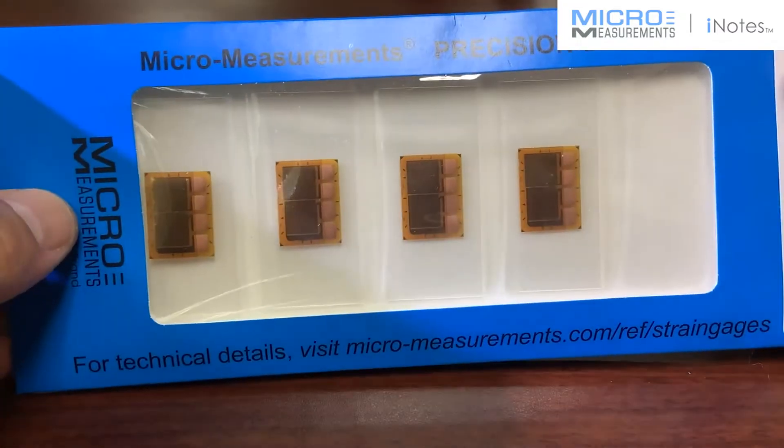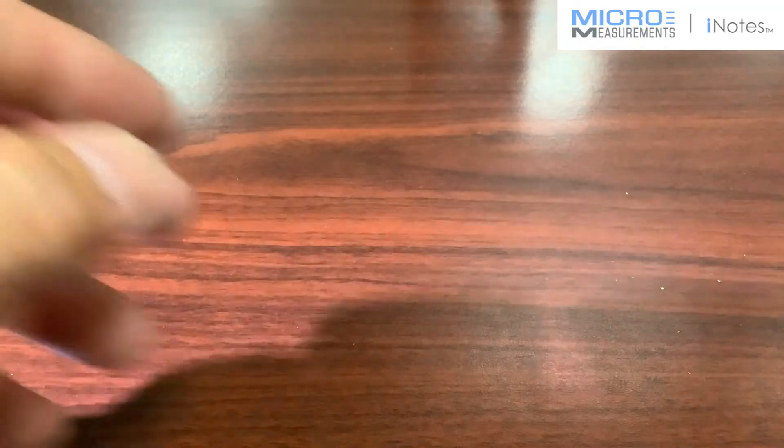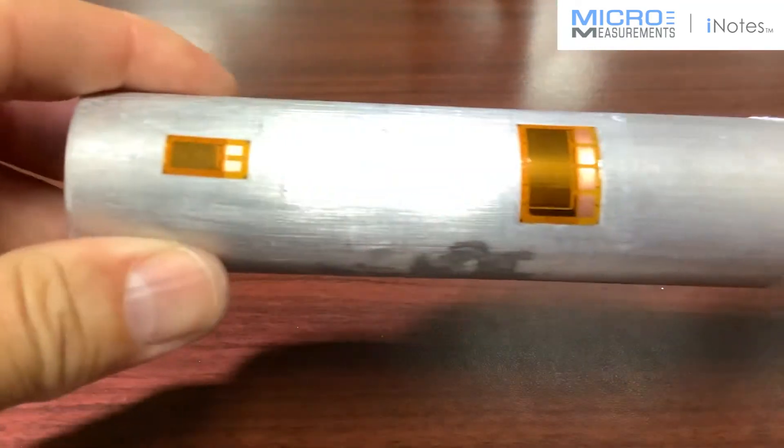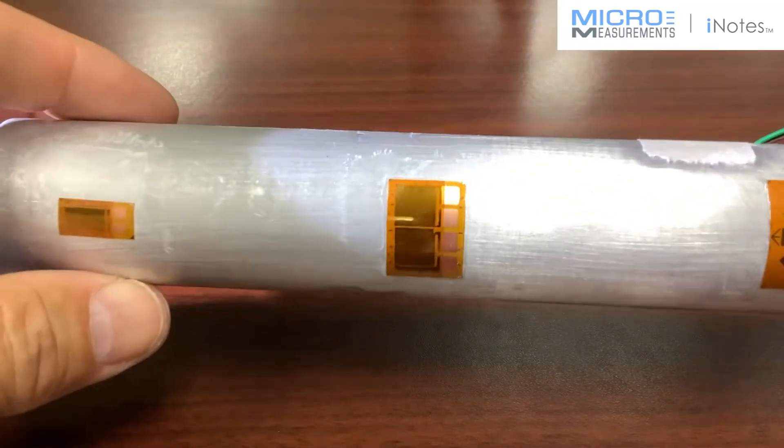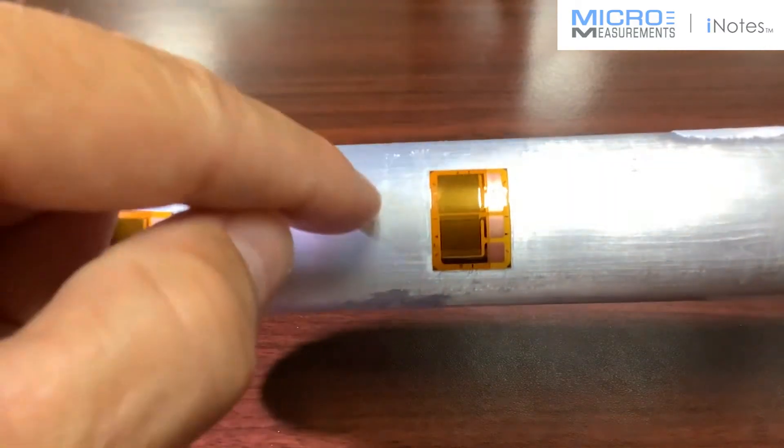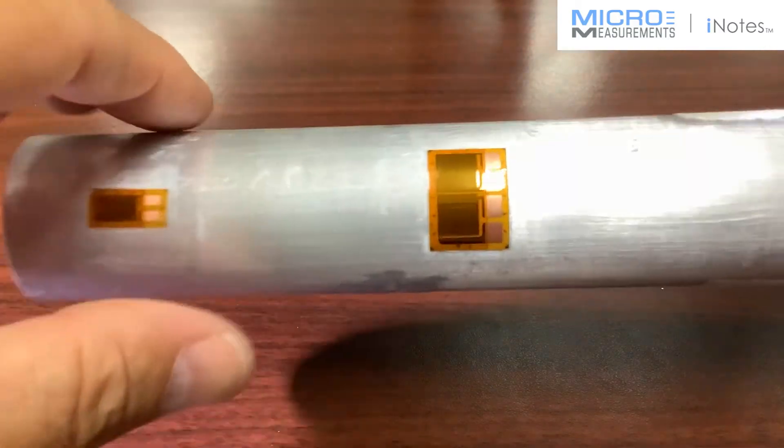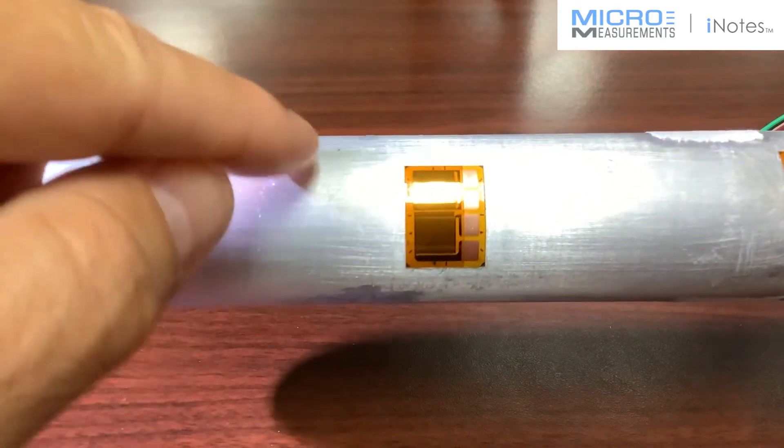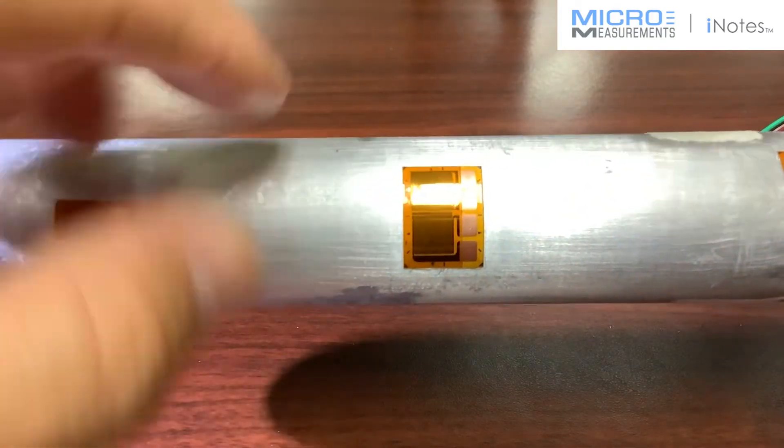Now, you might ask yourself, why would I use T-rosettes? And one of the reasons you might use them is, for example, if you're putting strain gauges on a member, this happens to be a tube, and maybe you need to measure strain in two directions. Imagine this were a thin-walled pressure vessel, and you're trying to measure the hoop direction as well as the longitudinal.